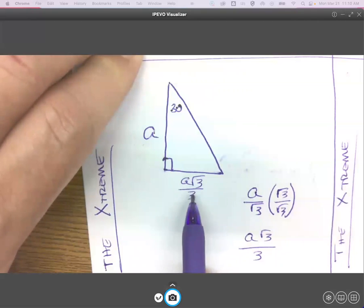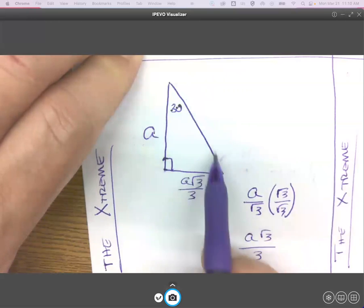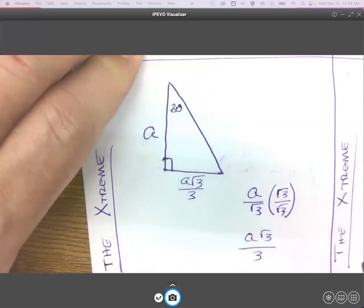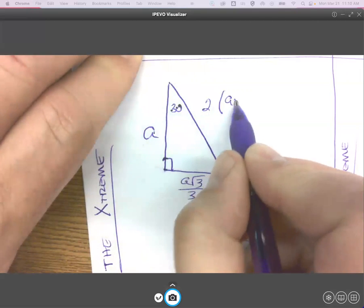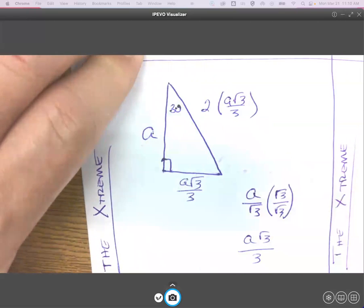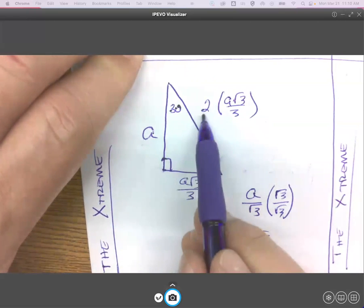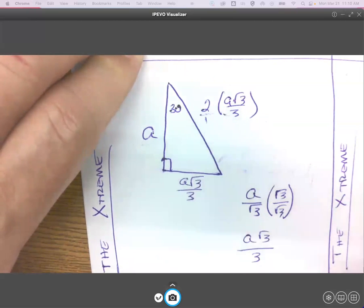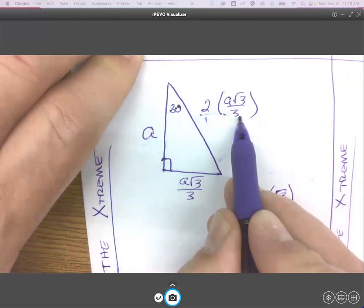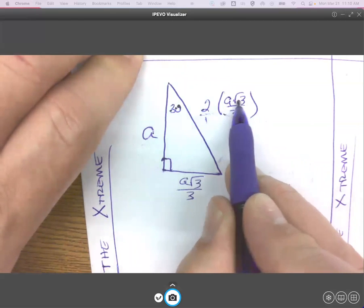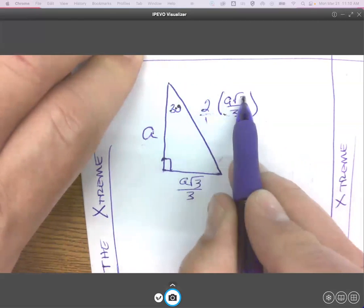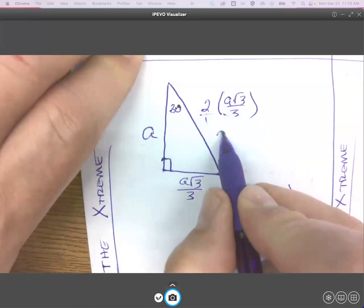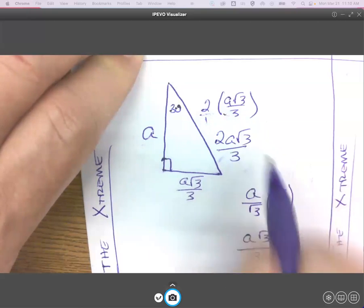And then if that were A, that were the smallest side, what would be the biggest side? The hypotenuse. Twice that, right? 2 times A root 3 over 3. And when we multiply a whole number like 2 times a fraction, we treat it as 2 over 1. So we're only multiplying it times the top, not the bottom. And because A and root 3 are multiplied, we don't have to distribute it. It's not like addition. So this would be 2A root 3 over 3.